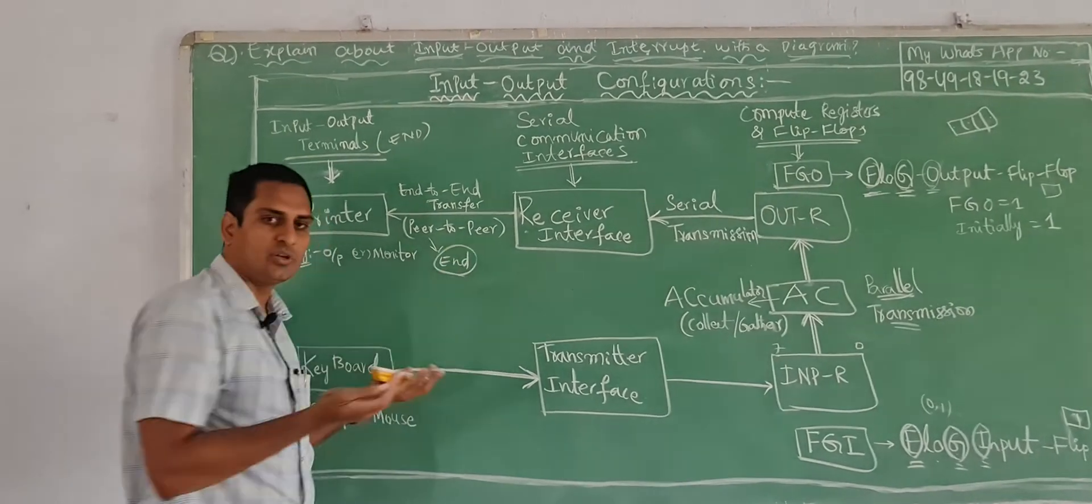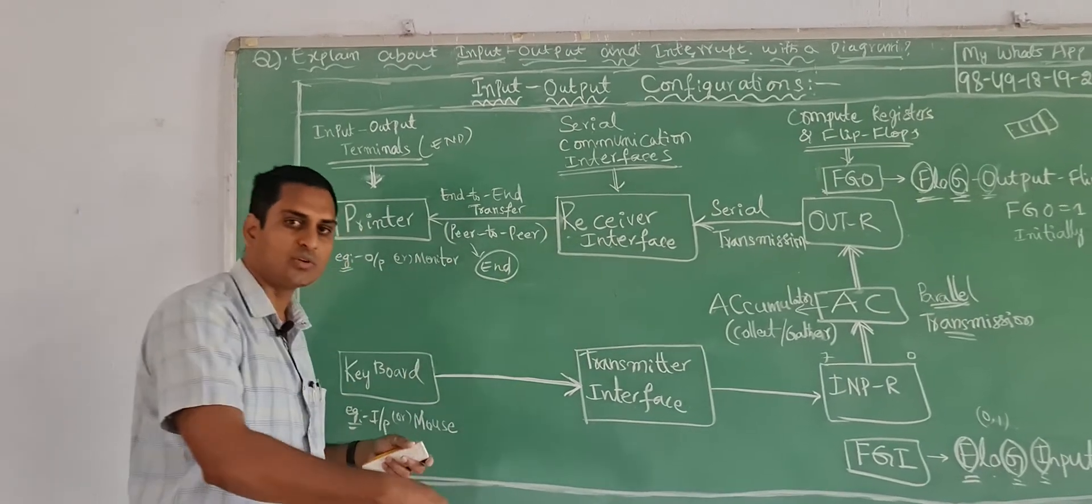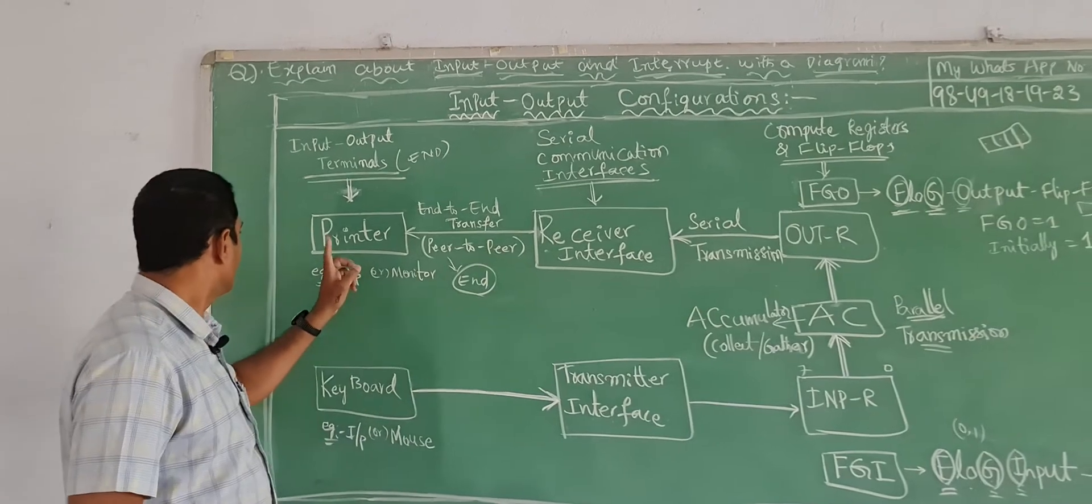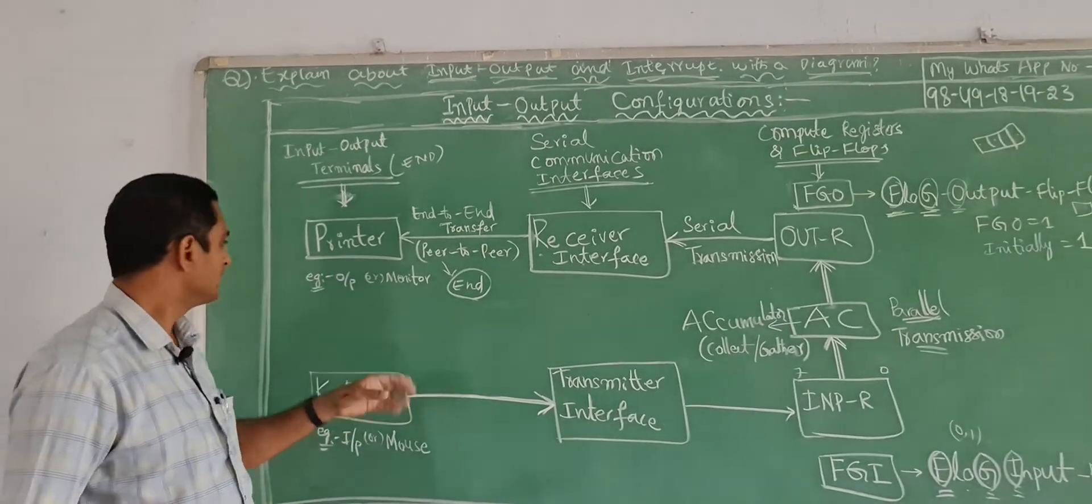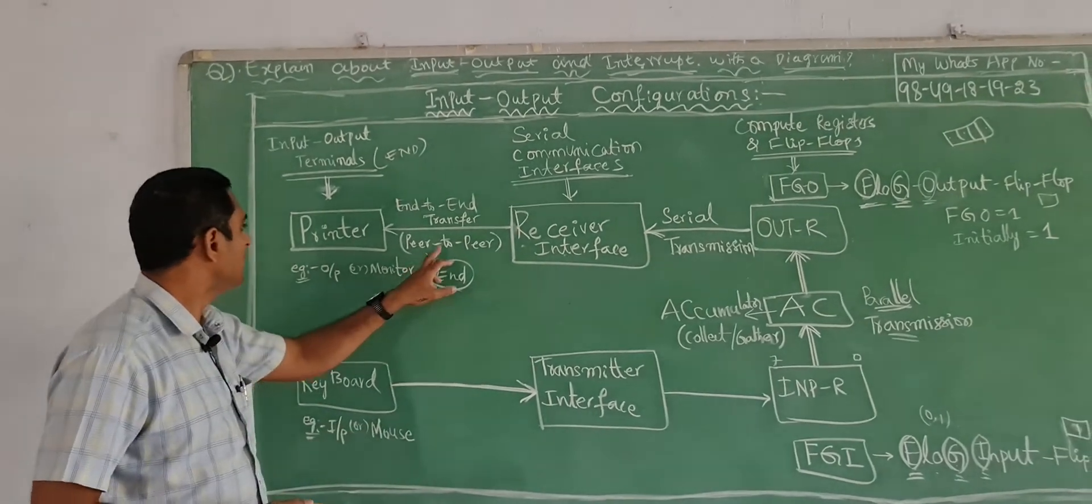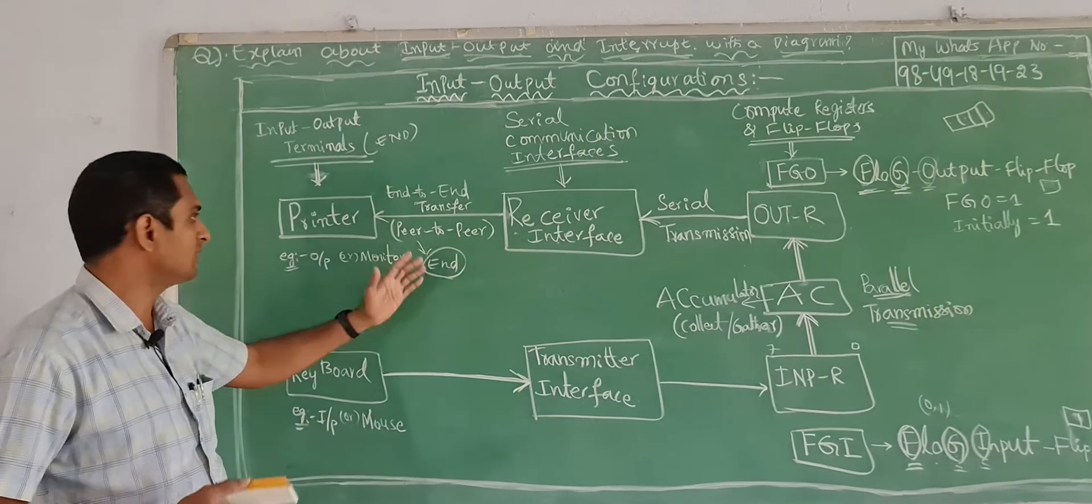From keyboard you cannot connect any other device. For CPU you can connect so many, pen drive you can connect, mic you can connect, so many devices you can connect to CPU. Whereas printer you cannot connect anything, monitor you cannot connect anything, keyboard and mouse. Those are called peer, peer means last devices, end devices, peer to peer communication will occur.